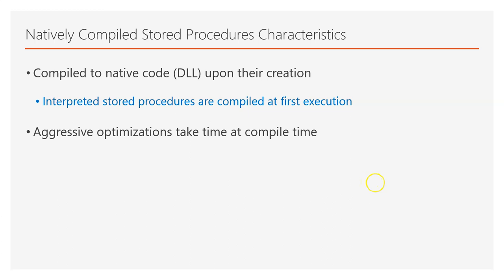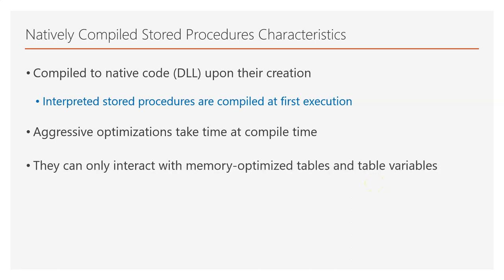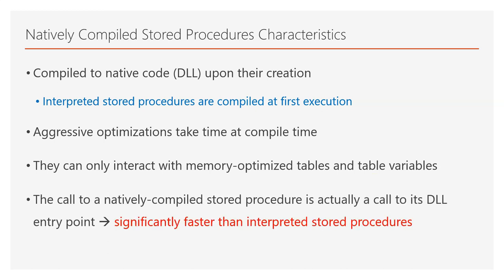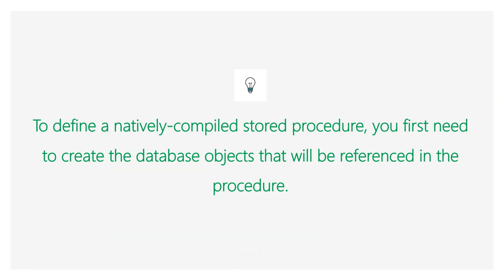Natively compiled stored procedures, as discussed in previous lectures, can only interact with memory-optimized tables and table variables. Moreover, the call to a natively compiled stored procedure is actually a call to its DLL entry point, and this is significantly faster than interpreted stored procedures. Note that to define a natively compiled stored procedure, you first need to create the database objects that will be referenced in the procedure, because the compilation takes place at the time you define it, and at that time it checks if the referenced objects are available.